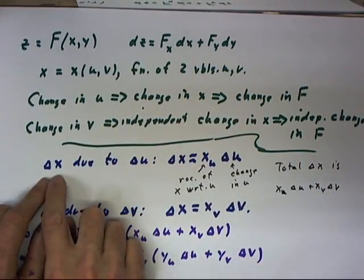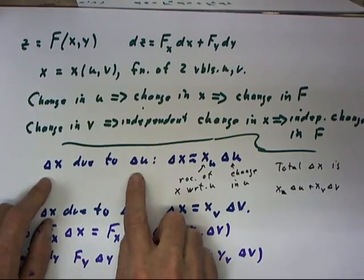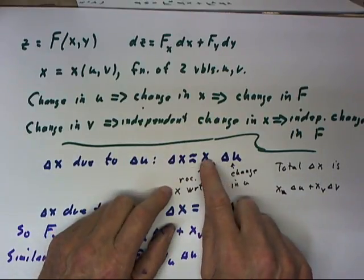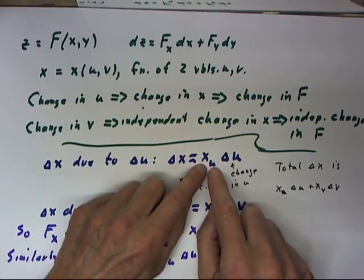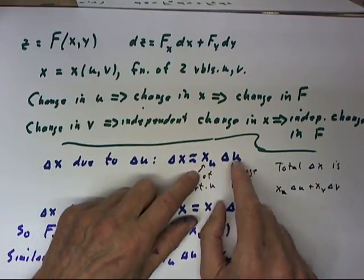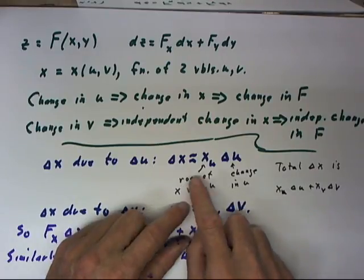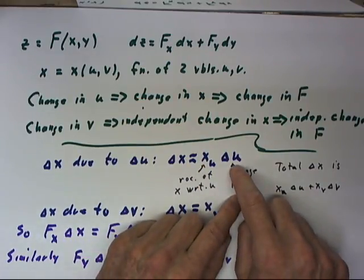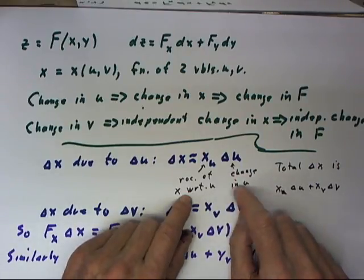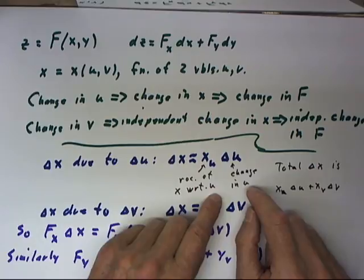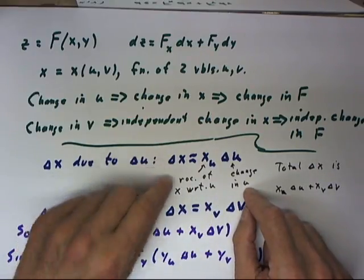Now, the change in x due to a change delta u, the change in the value of u is just delta x, is approximately equal to the u derivative of x. x sub u just means the u derivative of x multiplied by delta u. And that expression is fairly obvious. This is simply the rate of change of x with respect to u. And this is the change in u when we multiply that rate of change by the change. Rate of change with respect to u by change in u, we get the change in x.